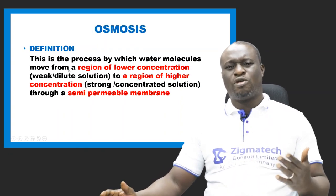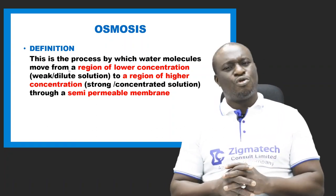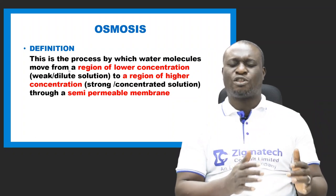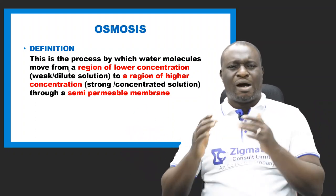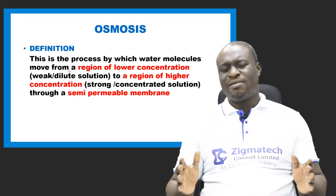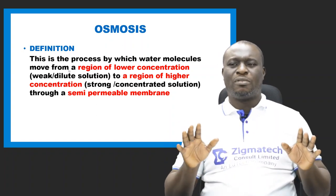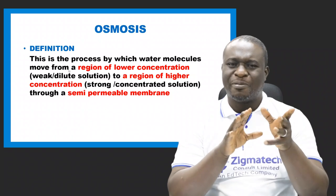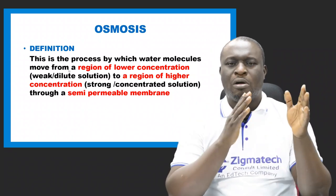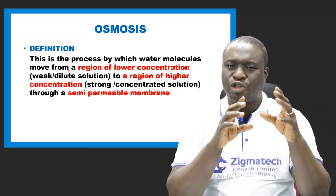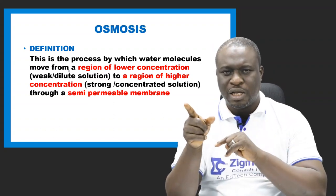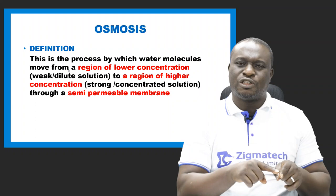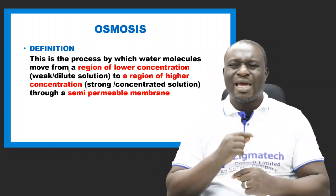The second process is osmosis. Osmosis is another process through which essential materials are moved from one part of the body to another. Please note the difference between diffusion and osmosis: in diffusion, molecules or ions move from a region of higher concentration to a region of lower concentration. But in osmosis, water molecules move from a region of lower concentration to a region of higher concentration through a semi-permeable membrane.